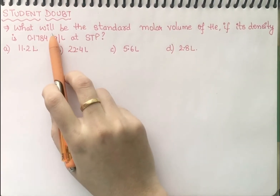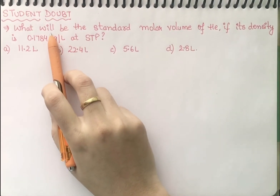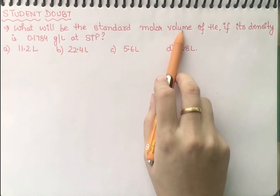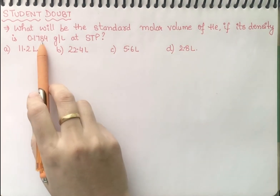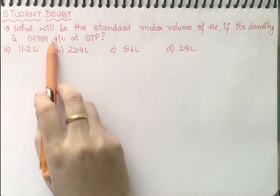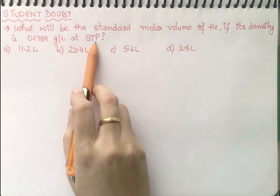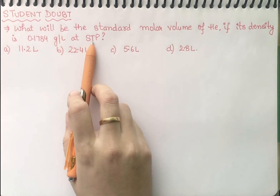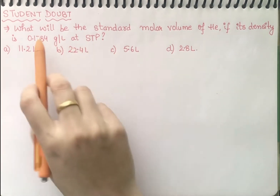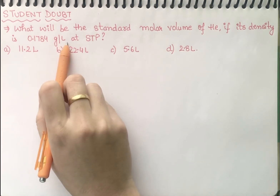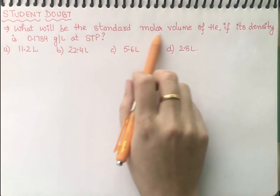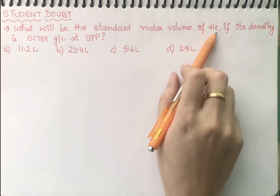Students, this is a student doubt. Let us see the statement first. What will be the standard molar volume of helium if its density is 0.1784 gram per liter at STP? They have given you the value of density that is 0.1784 gram per liter and they are asking you to find the standard molar volume of helium.